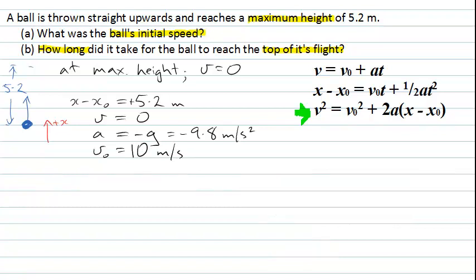Now to solve the second part of the problem. How long did it take? Now I'm looking to calculate a time. It's the time that it takes to get to the top that I don't know. And I need to again look over at the equations of motion and think which one of those contains the appropriate relationship of all the things I know to help me find the thing that I don't know.